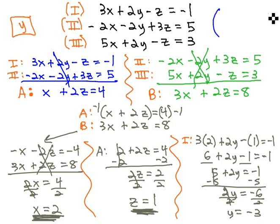As an ordered triple, I'll put it at the top here. x, y, z: x is 2, y is negative 3, and z is 1. Again, we have our solution.